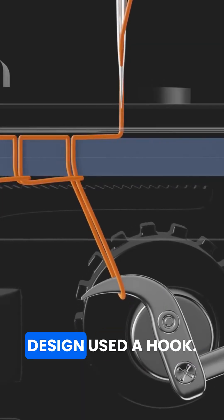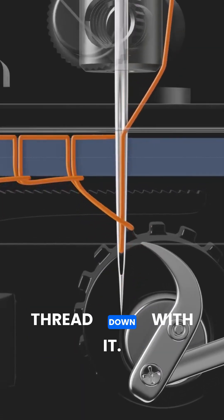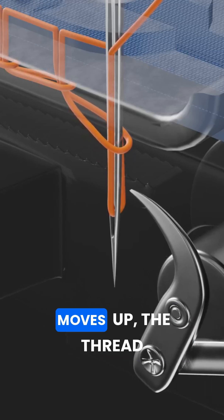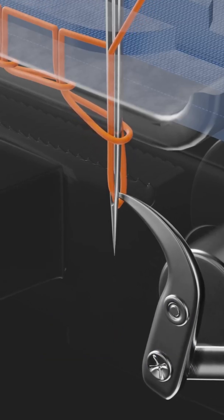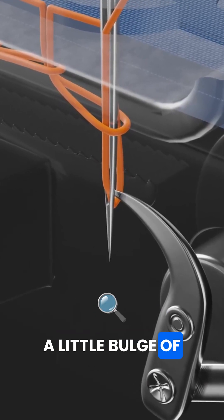Charles Raymond's design used a hook. The needle punctures the fabric and carries the thread down with it. Then as the needle moves up, the thread between the eye and the fabric shortens and buckles, forming a little bulge of thread.